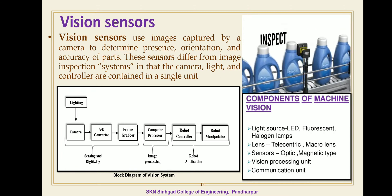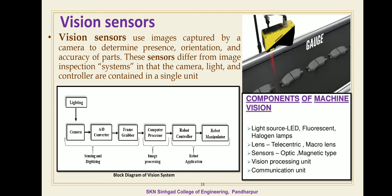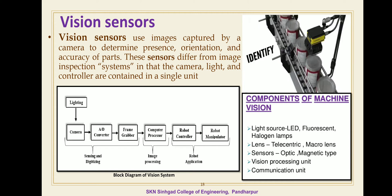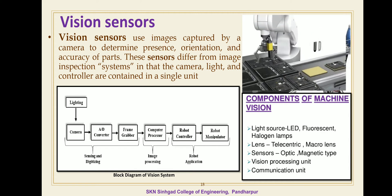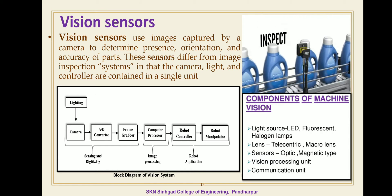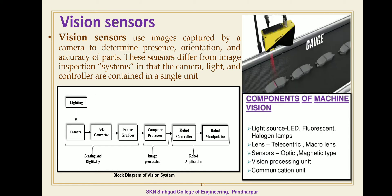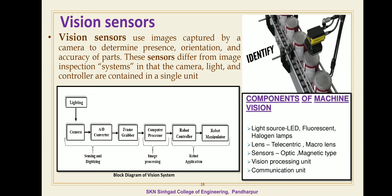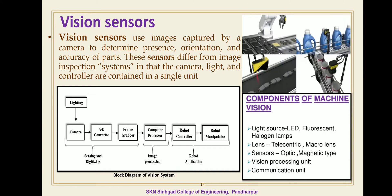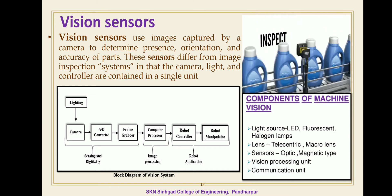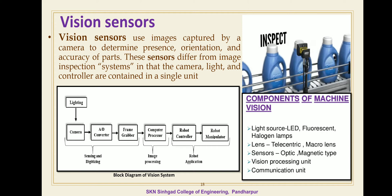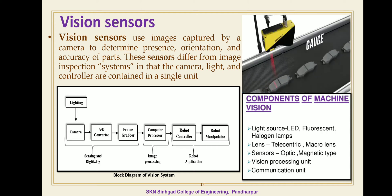The first component is the light source — all types of LED bulbs, fluorescent tubes, or halogen lamps act as a light source. Then different lens sensors, then a vision processing unit and communication unit. These are the different components of the vision sensor or vision system.